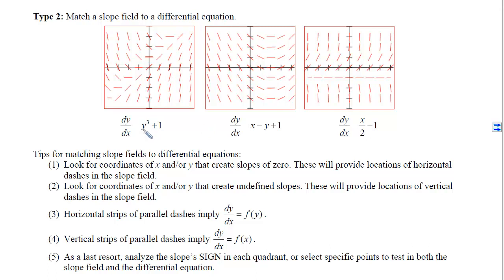Sometimes finding zeros is easy. For example, if we plug in y equals negative 1, we get a slope of 0 for dy/dx. That means at the location where y is negative 1, we should see horizontal slopes — and we do. So this differential equation matches this slope field. Tip 2 is to look for coordinates that create undefined slopes — values that cause division by zero. Since these three problems have no division of variables, this tip doesn't apply here, but it will appear on web exams, the AP, or a test.